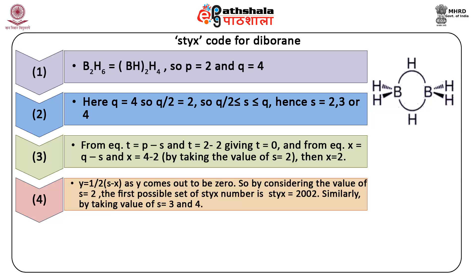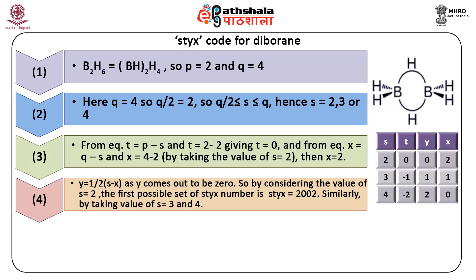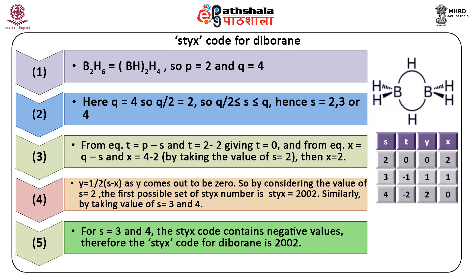Other possible STYX codes can be calculated for S values of 3 and 4, but looking at the STYX table, those codes contain negative values for S = 3 and 4. Hence, the only possible STYX code for diborane is 2, 0, 0, 2, which is rationalized by the structure of diborane: there are 2 boron-hydrogen-boron bridges (S = 2), no three-center boron-boron-boron bonds (T = 0), no two-center boron-boron bonds (Y = 0), and 2 boron-hydrogen terminal bonds (X = 2).